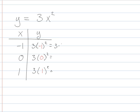3 times 1 squared is 3. 3 times 0 is 0. 3 times 1 is 3. So my points are negative 1, 3, 0, 0, and 1, 3.